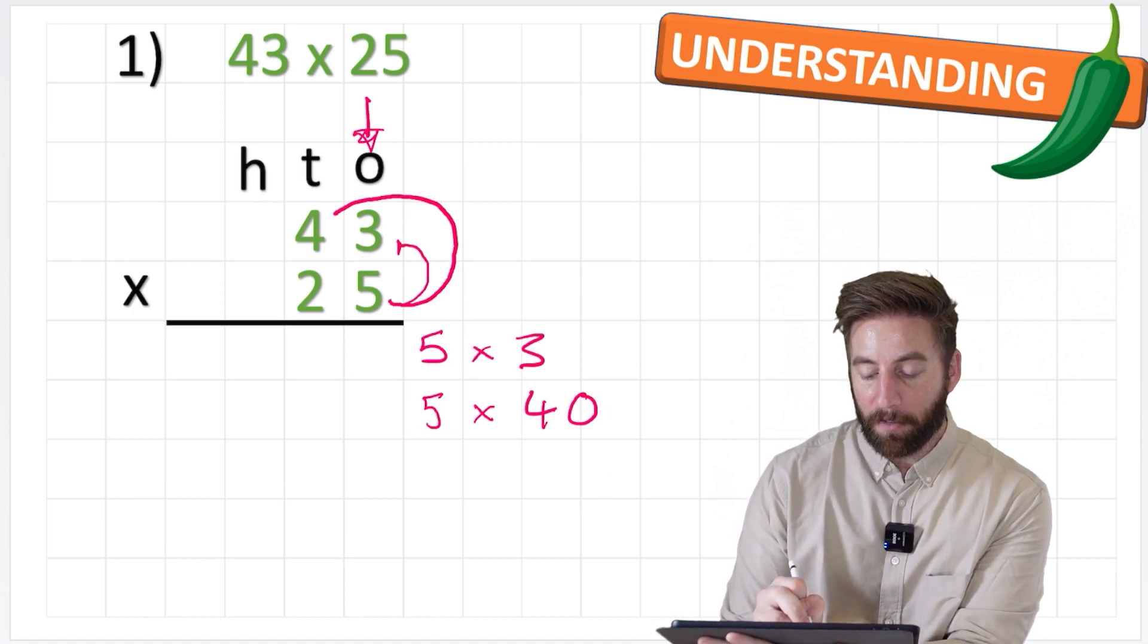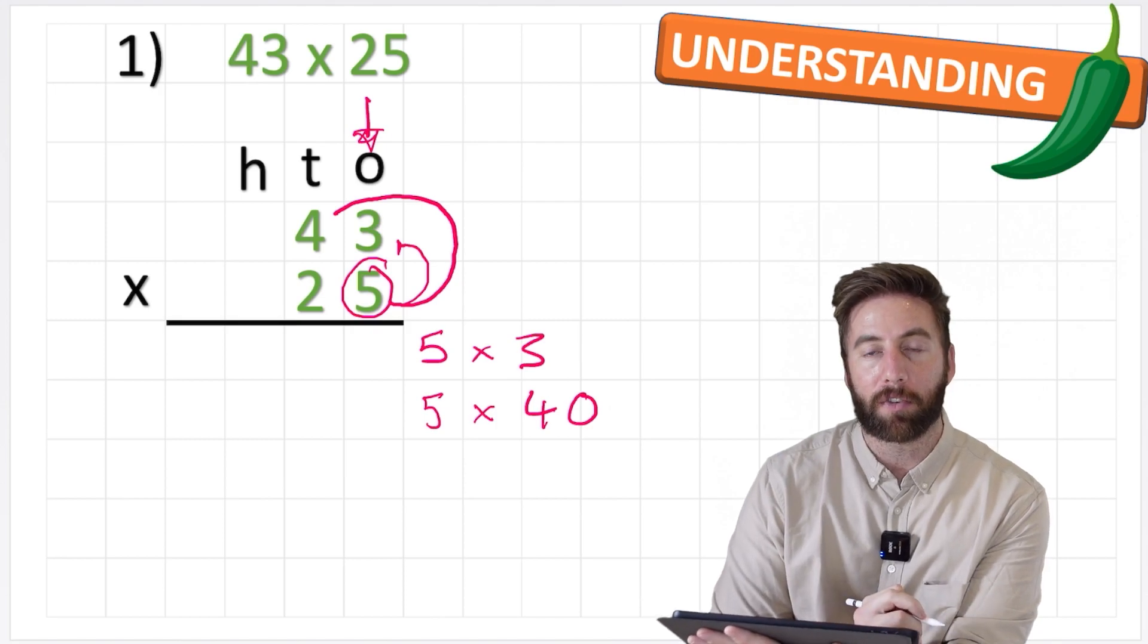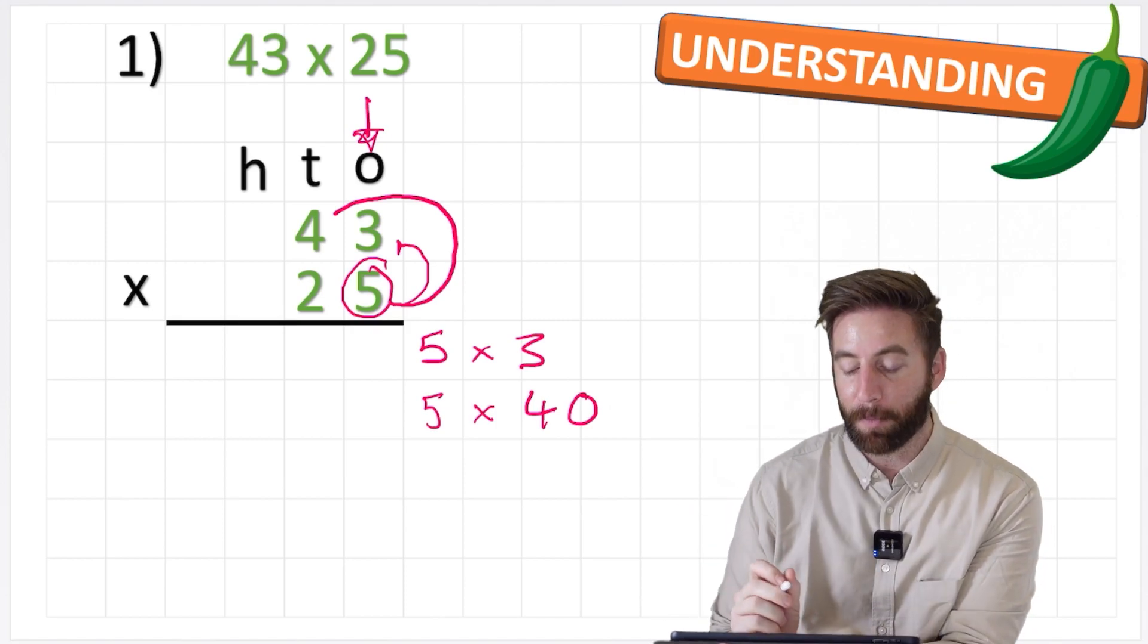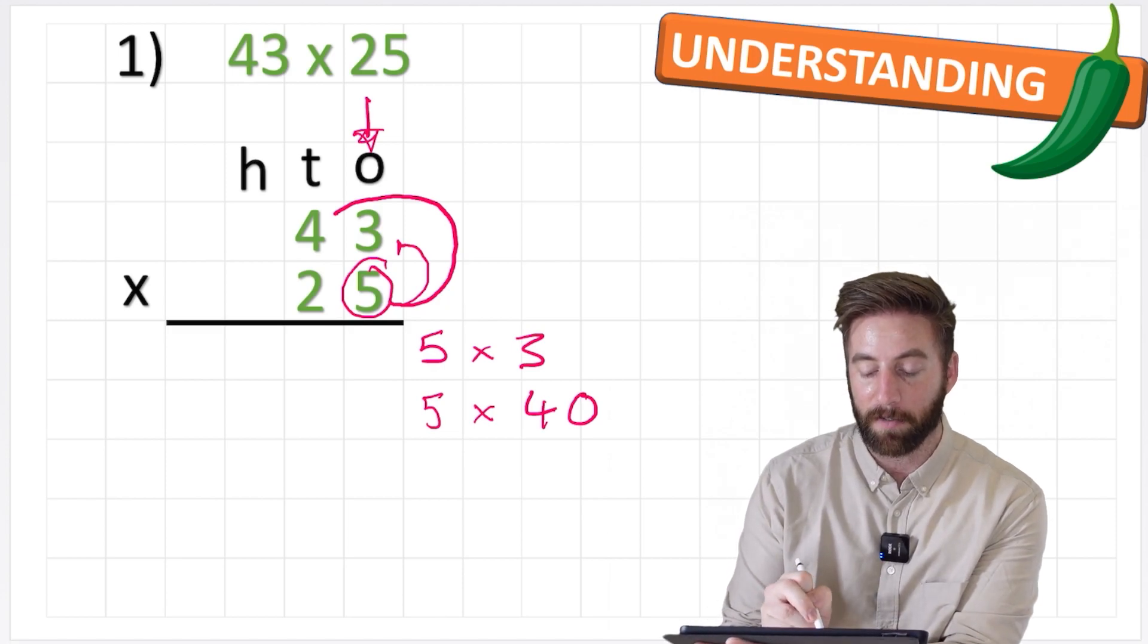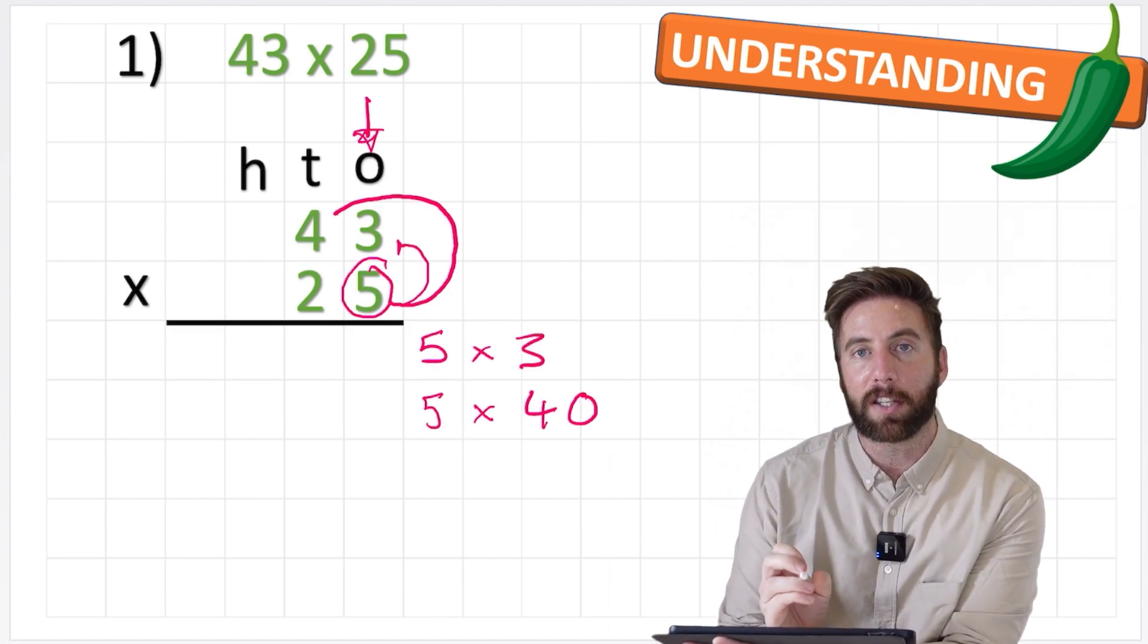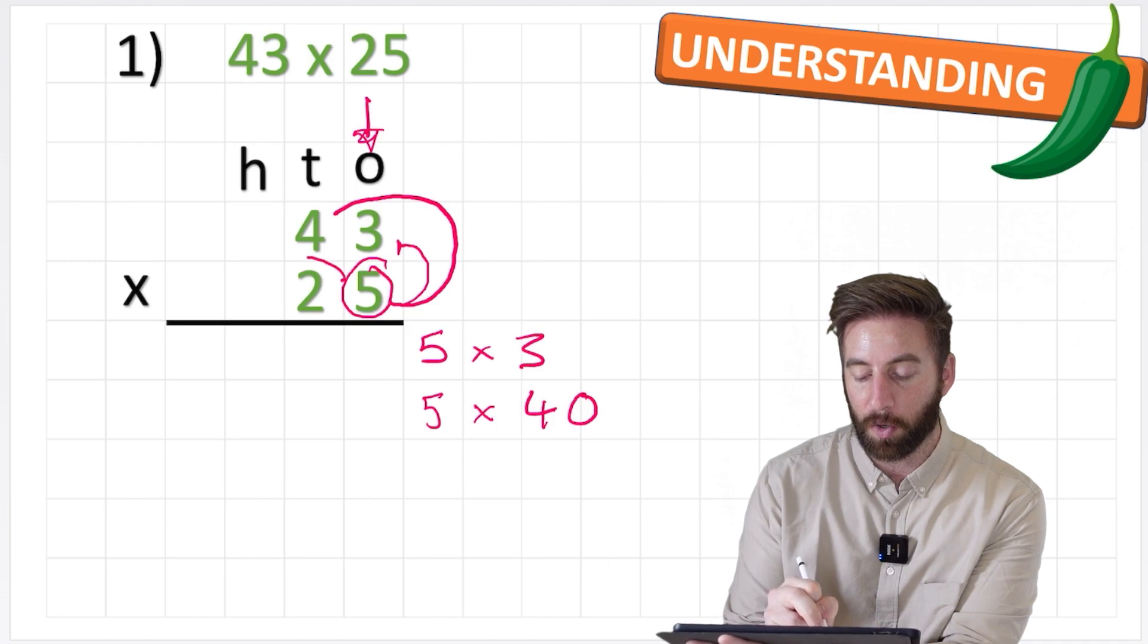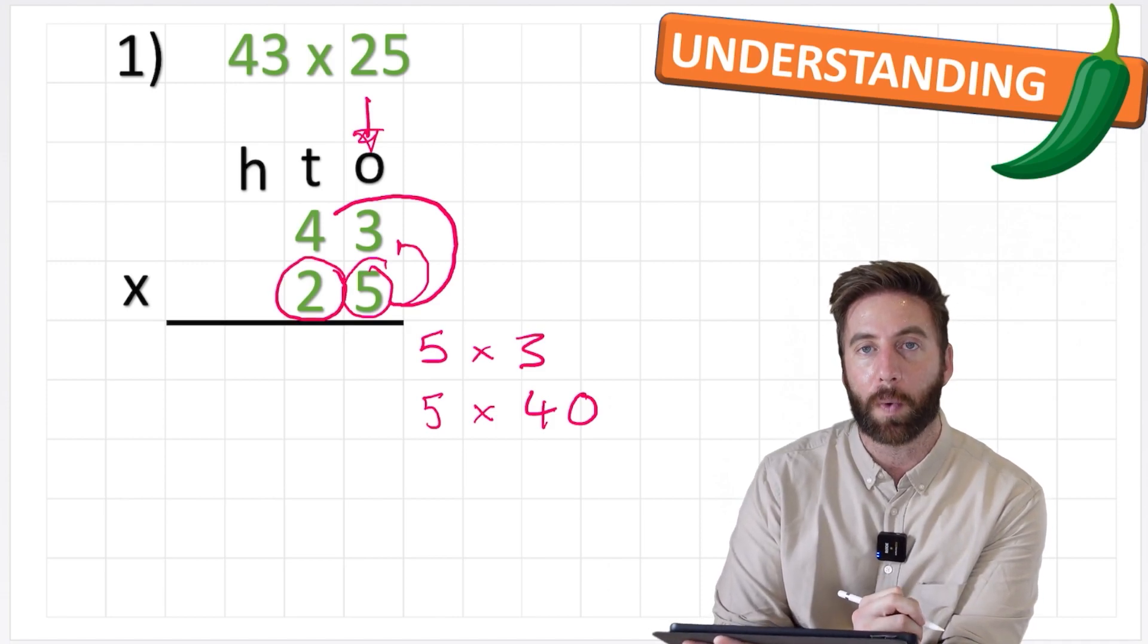Now I've multiplied my 5 by the 3 and by the 4 which means that between my 5 times 3 and 5 times 40, what I've actually done is 5 times 43. Now I'm going to look at the second digit in this number, the 2. And we know it's not a 2, it's actually a 20.